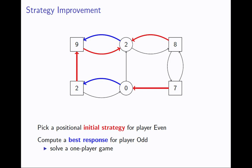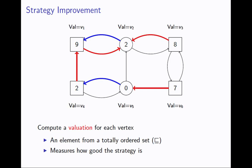This best response is a strategy that, given player even is playing the red strategy, maximizes player odd's chance of winning. This tends to be straightforward because once player even has fixed his strategy, you're left with a one-player game, and there are many methods for solving one-player games efficiently. Once you've found the best response strategy, you compute an evaluation for each vertex.